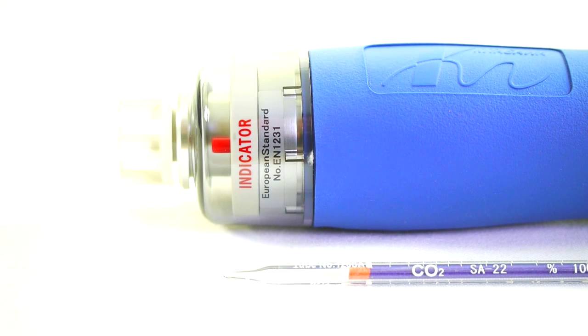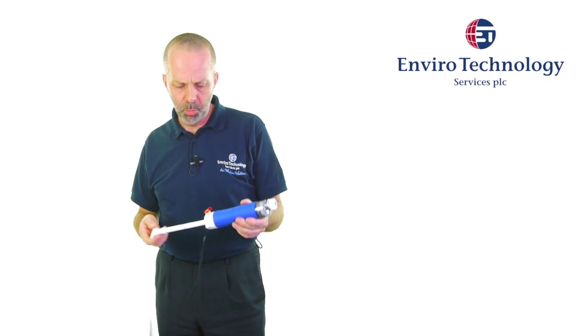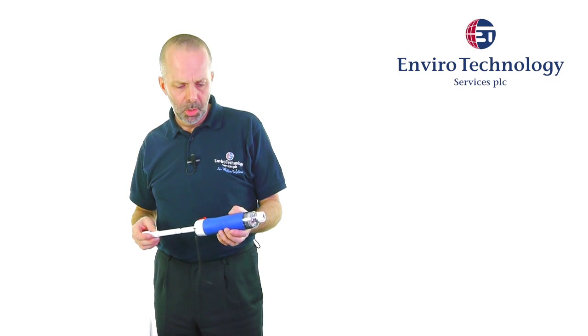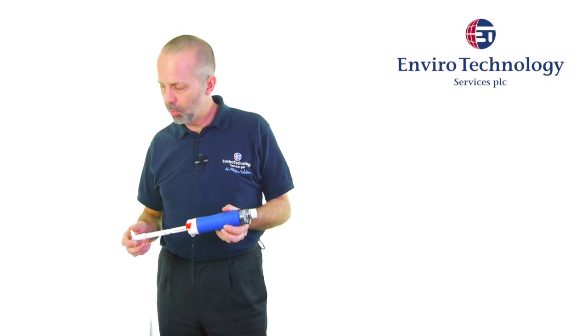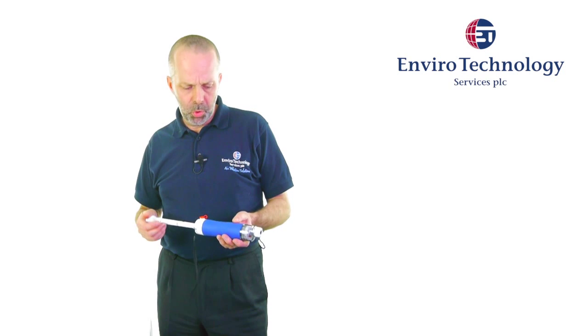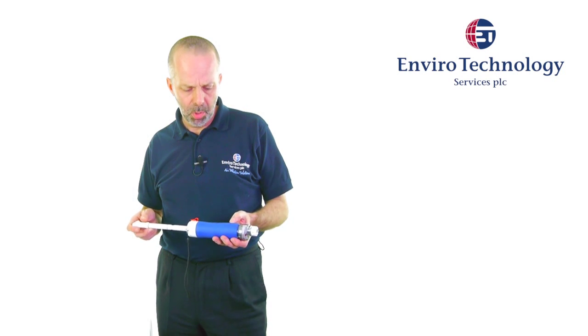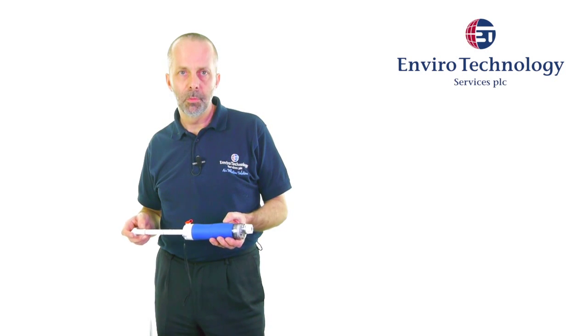The design of the pump means that it will pull through an exact volume of air, 100 millilitres per stroke, so this ensures that the sample volume of air passing through the tube is very accurate. Most of the gases can be sampled with a maximum of three strokes of the pump which means it can be done very quickly, very easily.